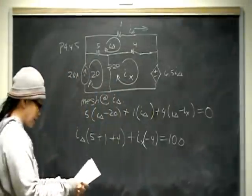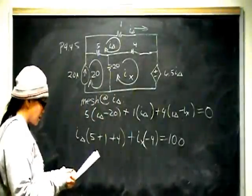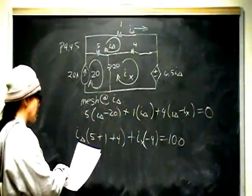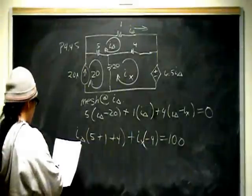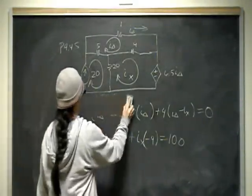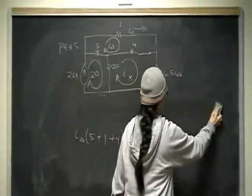Double check. So let's see. I sub x has negative 4. I sub delta, 5 plus 1 plus 4 equals 100. Yes. So that's that mesh equation.